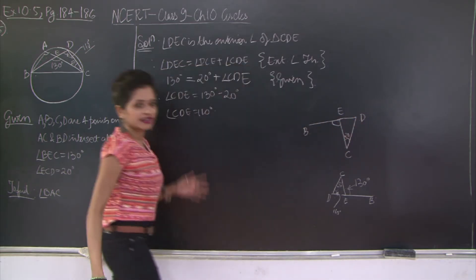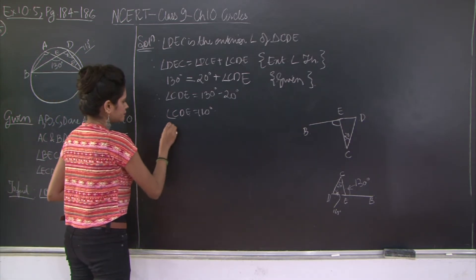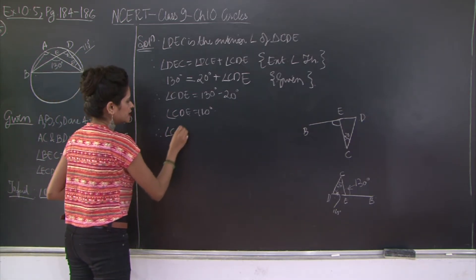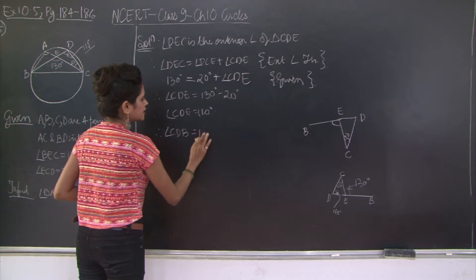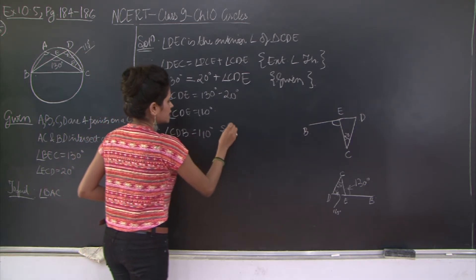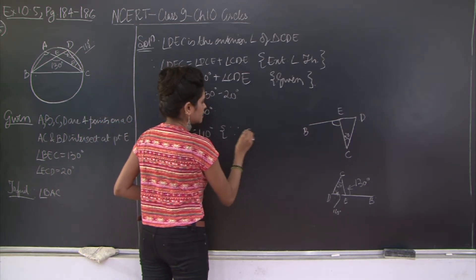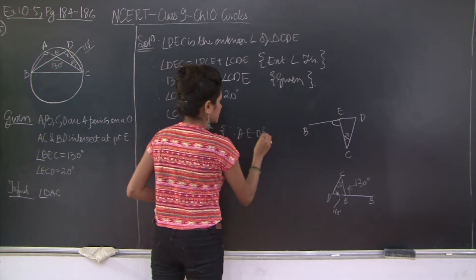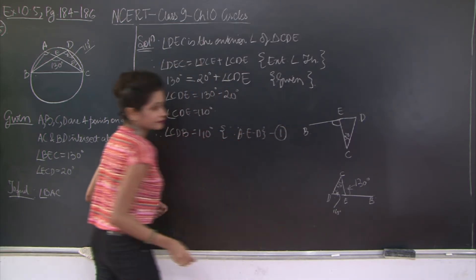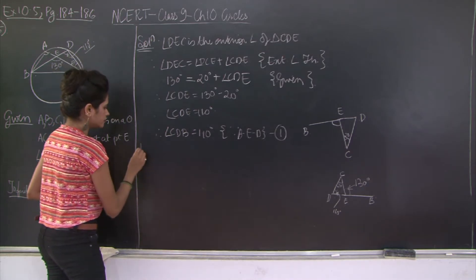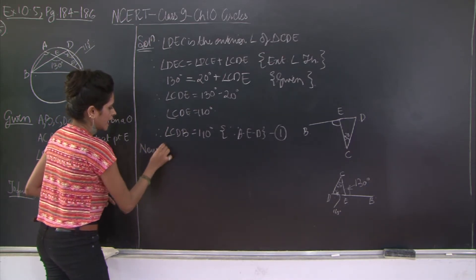So CDE is the same as CDB. See CDE is the same as CDE. And E lies on the line segment BD. Therefore instead of CDE we can write CDB. Therefore angle CDB is 110 degrees since E lies on the line segment BD.